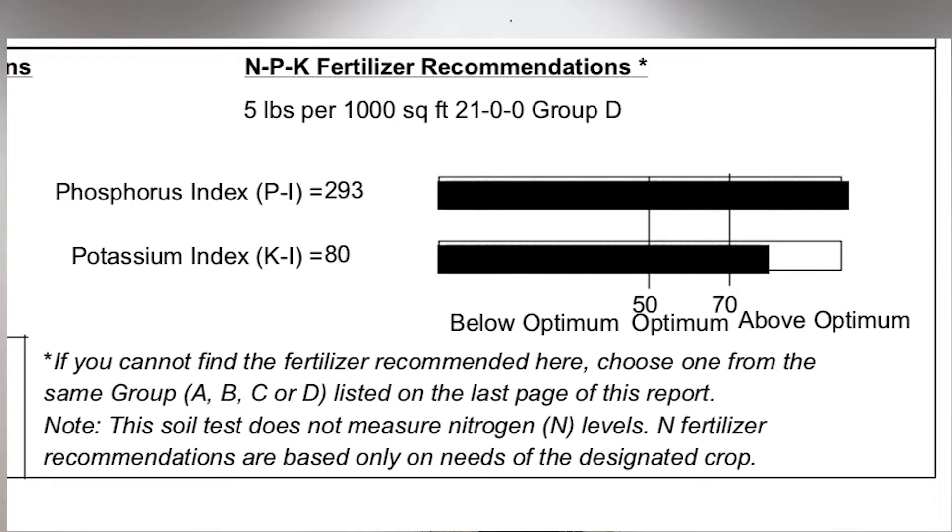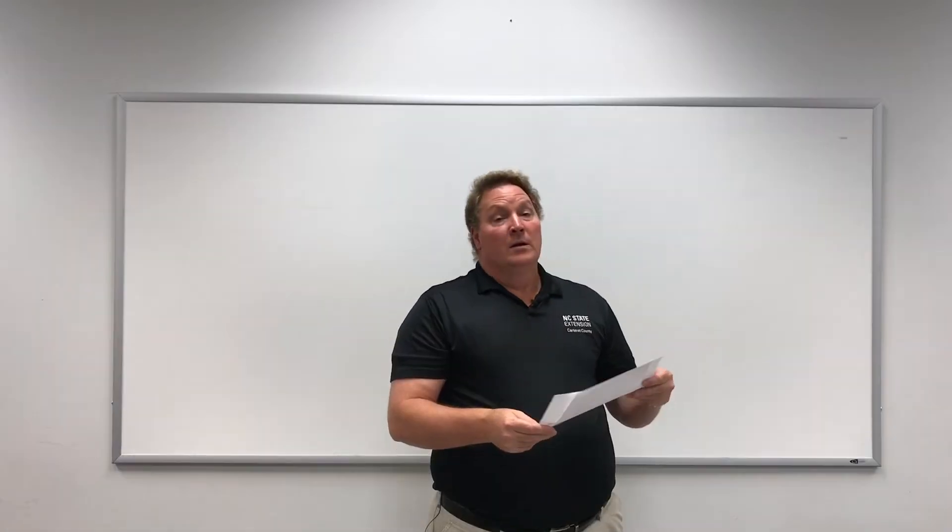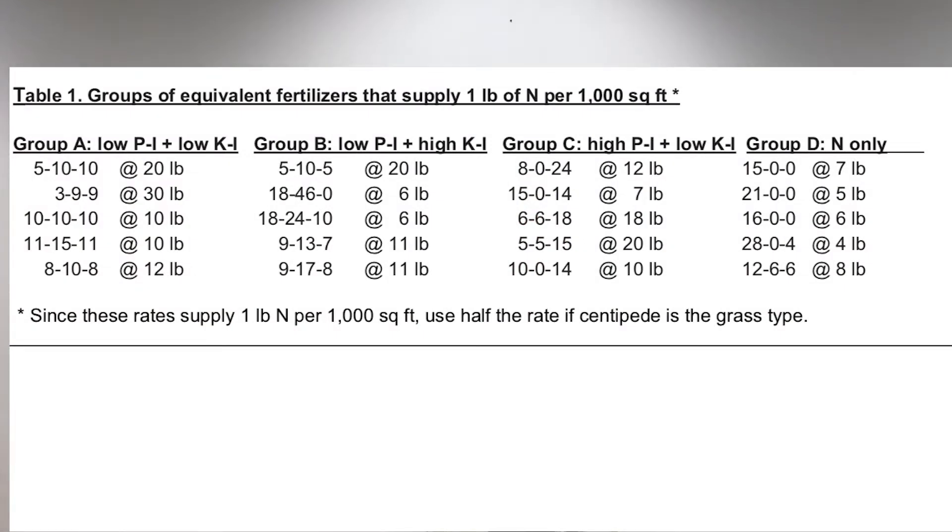What does Group D fertilizer mean? If we look on the back of our form - and the last page is usually about the same for almost every fertilizer recommendation - there's a table at the bottom. If we look closely at that table all the way over to the right side, it says Group D: nitrogen only. That's where we are. We see there are several different fertilizers that are high in nitrogen and low in other nutrients or have zero on the other nutrients, and that's what we want.